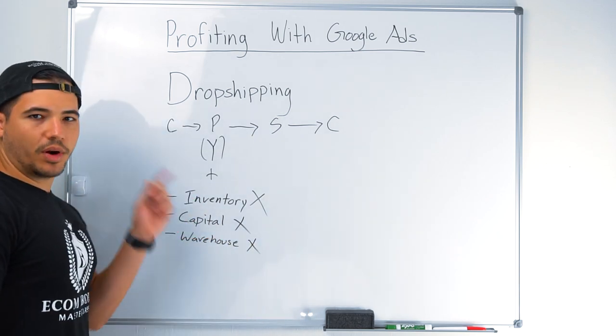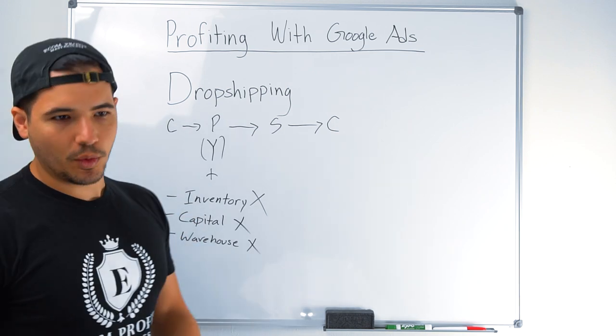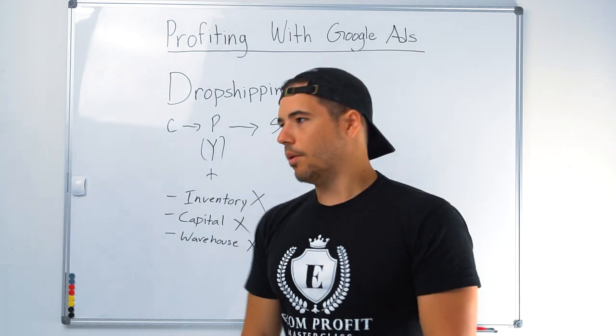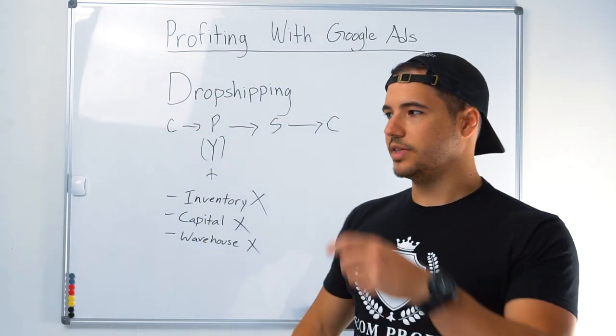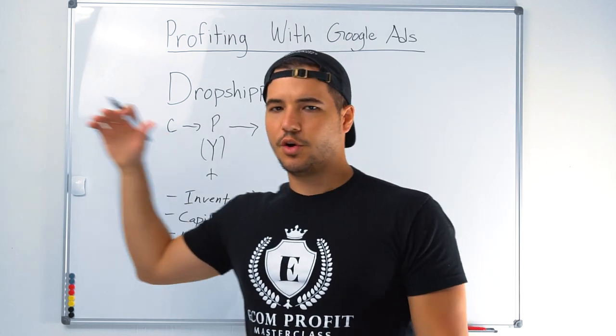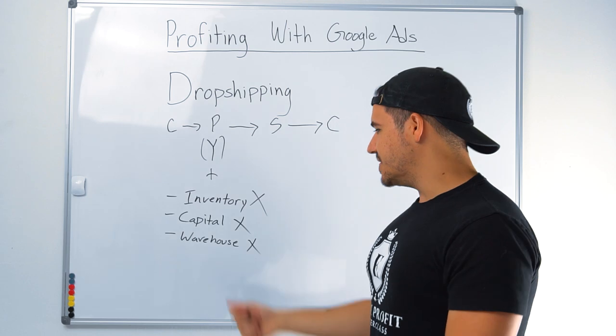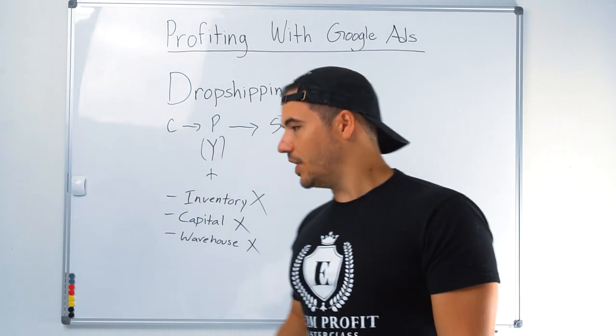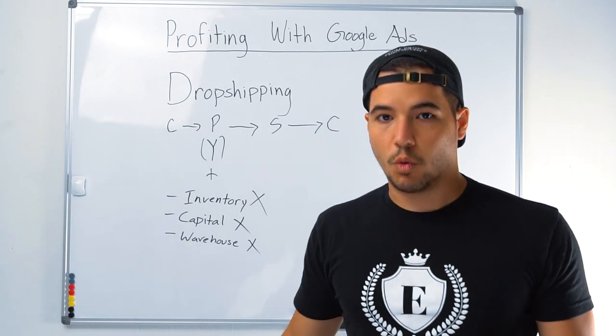No inventory, no capital, no warehouse. This is probably one of the biggest issues that I see with other things like Amazon FBA or starting your own brand and buying all these products in bulk. This is the main issue when people are starting off: they don't want to invest thousands and thousands of dollars into something that you don't even know if it's going to work.